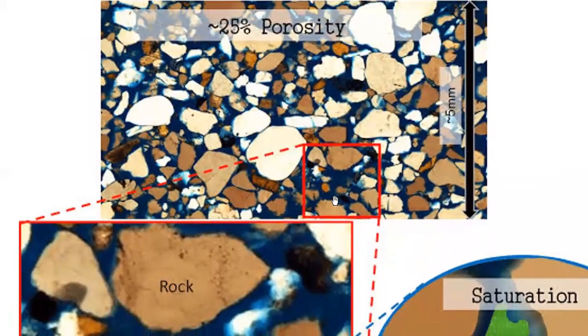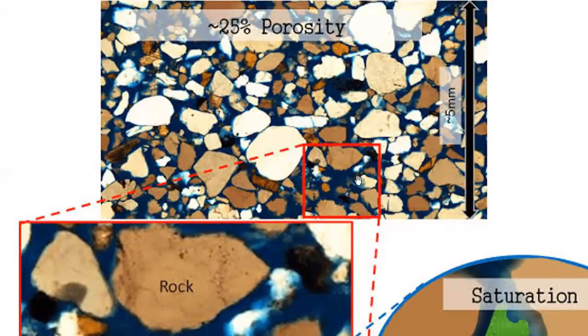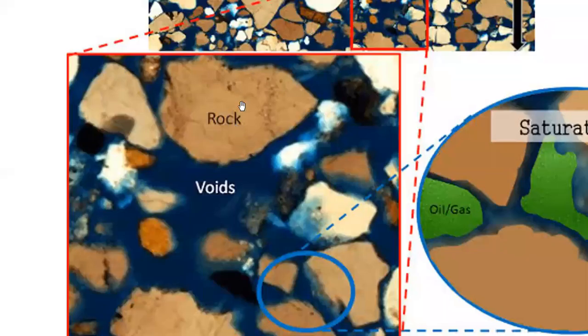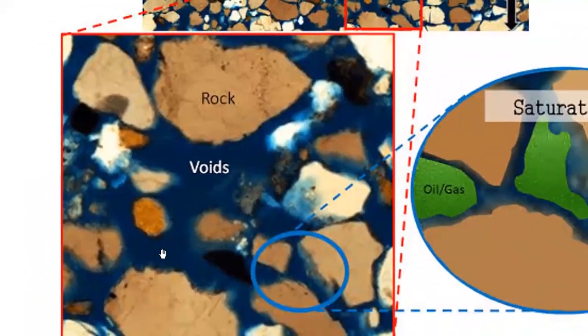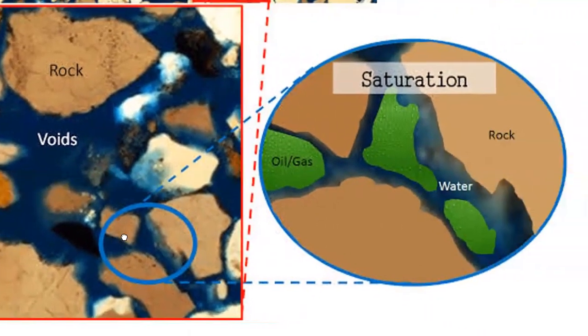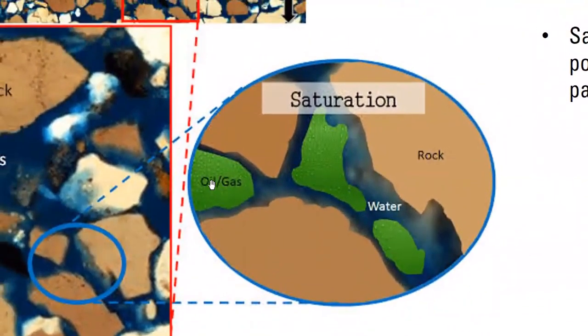If you zoom in this area, you can see the rock grains and the black area showing the pores. They are not actually empty - they are not void. They are filled with something. And if we zoom in again, you can see oil or gas and water filling these pores.